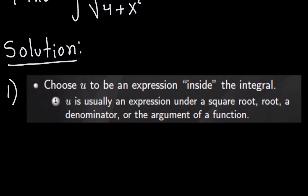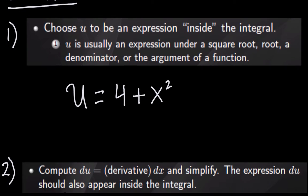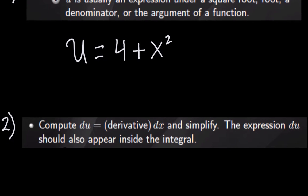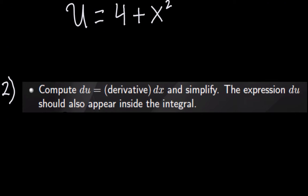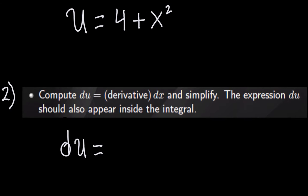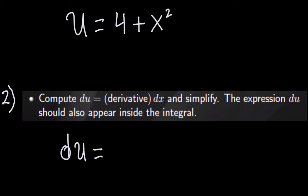So let's do that. u would be 4 plus x squared. That's all I have to do in step number one — just choose my u. Now the second step is take the derivative of that expression. So du would be equal to the derivative of that. The derivative of 4 is 0, and the derivative of x squared is 2x, so I get 2x dx.